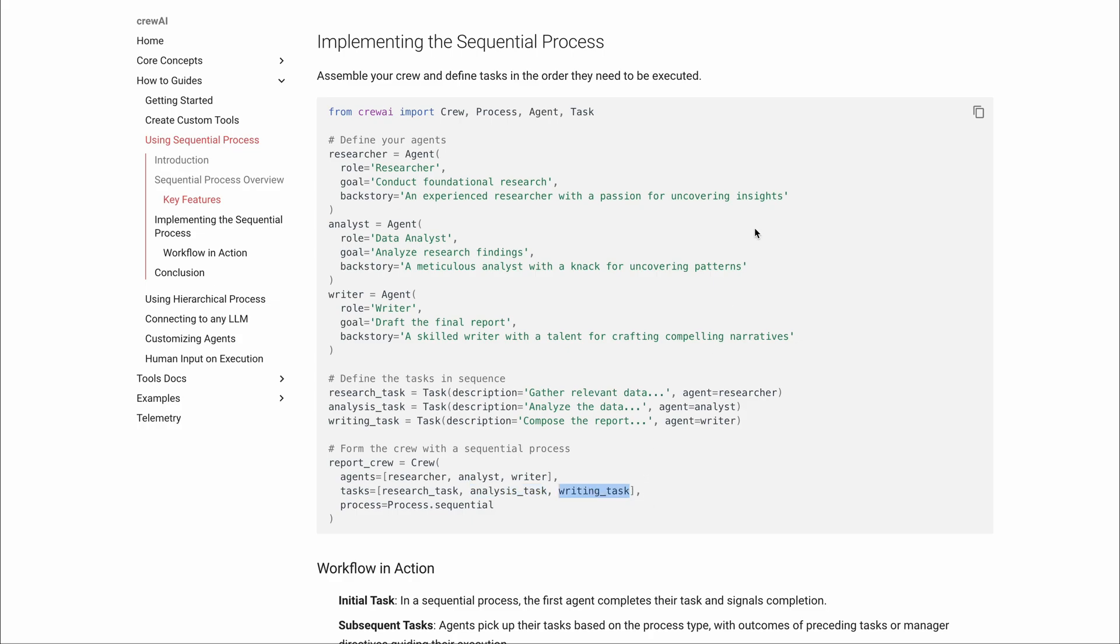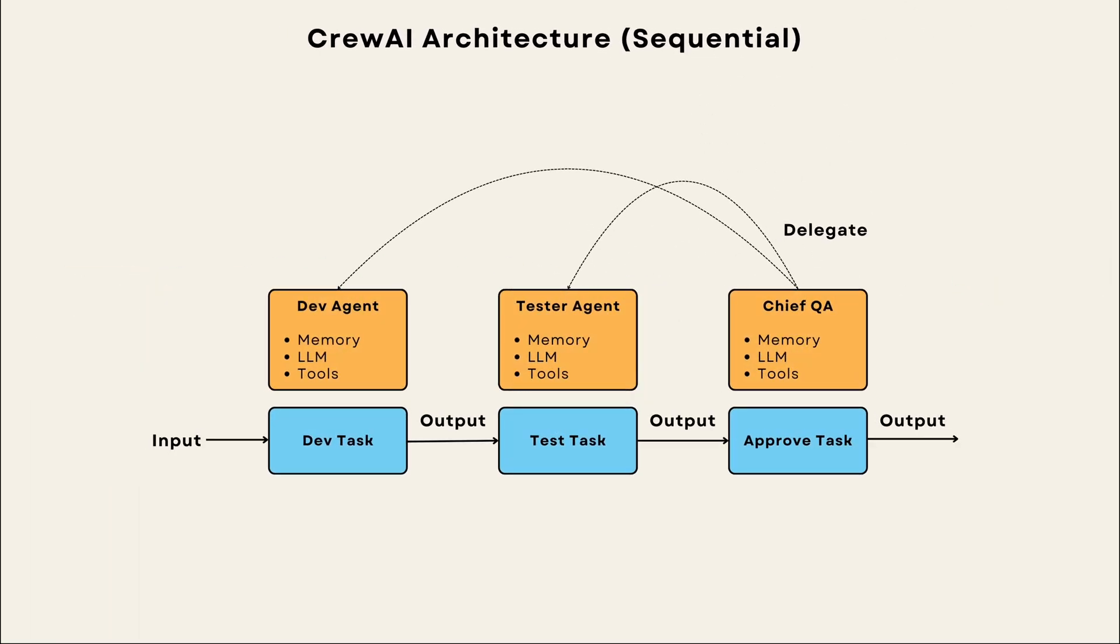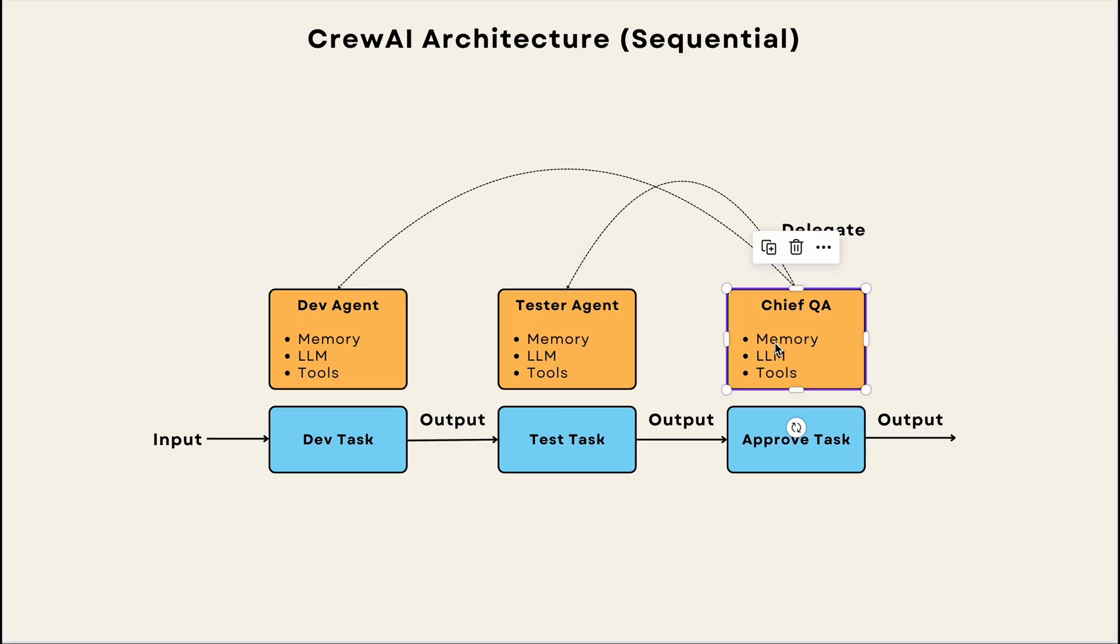And this goes on until the last task. Imagine you have a game builder crew where you have three agents, developer, tester and chief QA, who approves the game and the chief QA also has the ability to delegate. And tasks being develop, review and approve. The first task is for the developer to build the game and signal completion. Then based on this output, the next agent kicks in in order to take over the next task. And then once the testing is done, the chief QA takes over for approval. If the chief QA feels that the job has not been done properly, it will delegate the task either to developer or tester back and forth until it feels that the job is done.